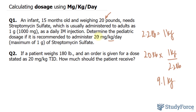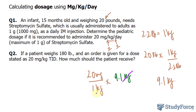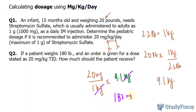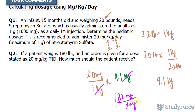Now that we have this information, the box tells us we have to give 20 milligrams per 1 kilogram per 1 day. We take 20 milligrams per 1 kilogram and multiply it by the 9.1 kilograms we found. The kg units cancel out, leaving us with 20 times 9.1. Using our calculator, 20 times 9.1 gives us 182 milligrams per day. So the patient should be given 182 milligrams of streptomycin sulfate as a daily intramuscular injection.